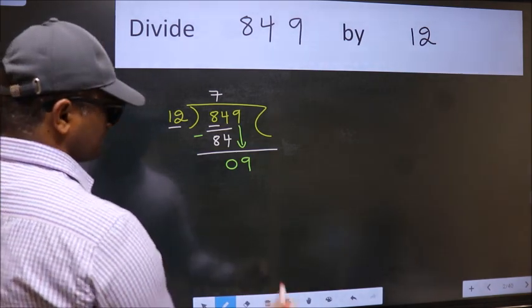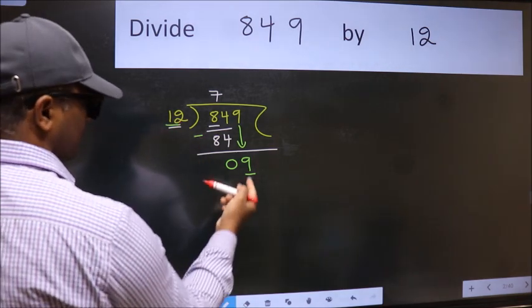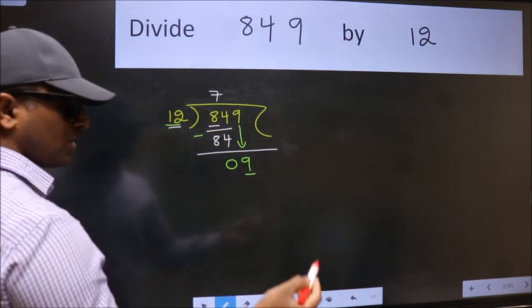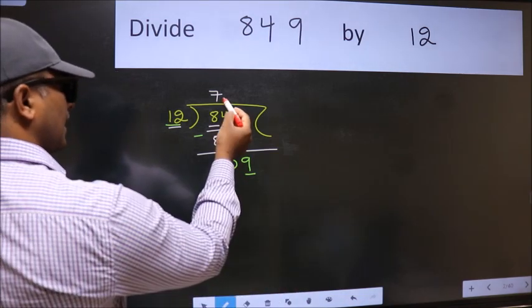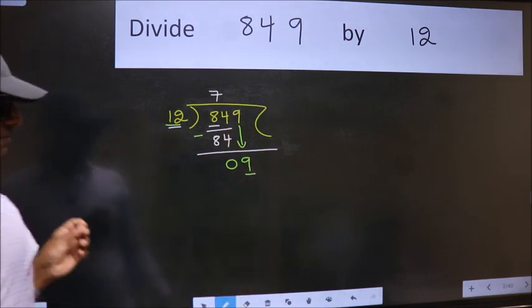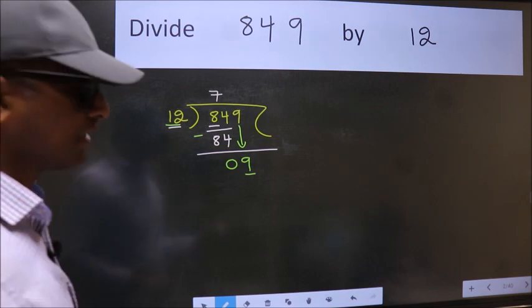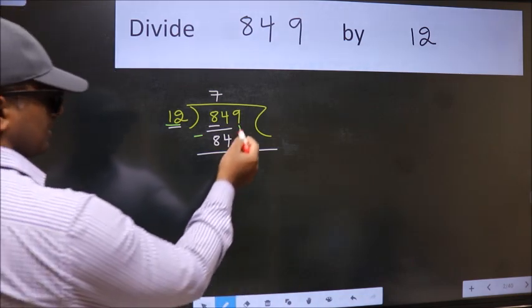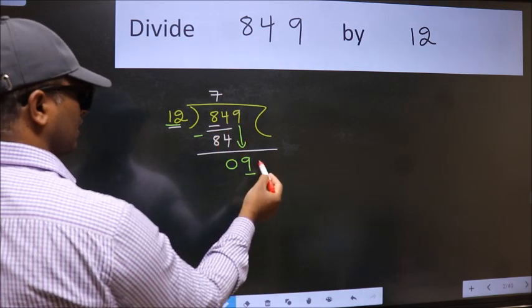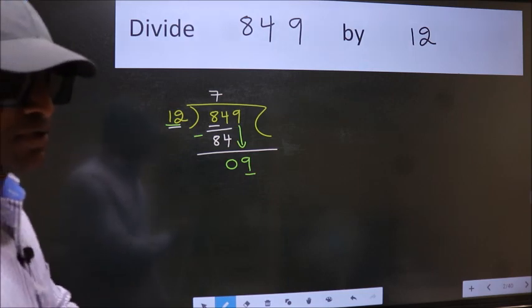And the mistake is this. Here we have 9 and here 12. 9 is smaller than 12. So what many do is they directly put dot take 0. Which is wrong. Why is it wrong? Because just now you brought this number down. And in the same step, you want to put dot take 0. Which is wrong.